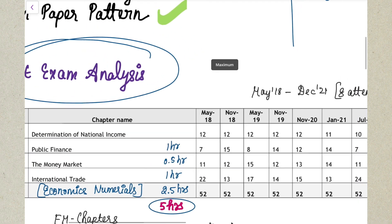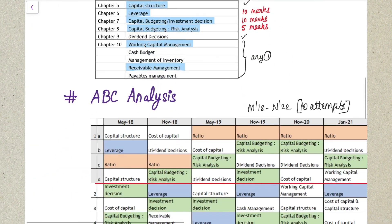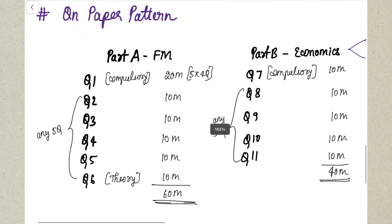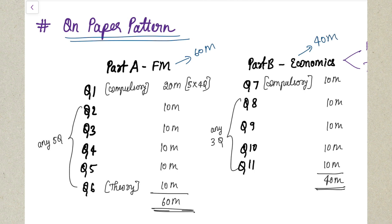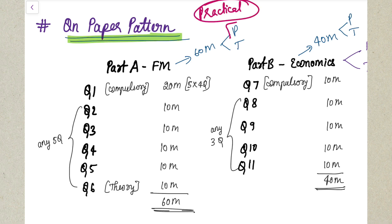Before getting into the analysis, let me give you a brief on the question paper pattern. FM comes for 60 marks in your examination and Economics comes for 40 marks. In FM you have both practical and theory, and in Economics also you have both practical and theory. In FM, please concentrate on the practical part, and in Economics also concentrate on the practical part - and to boost up our scores we'll concentrate on theory too.